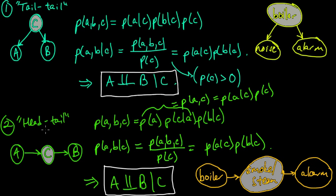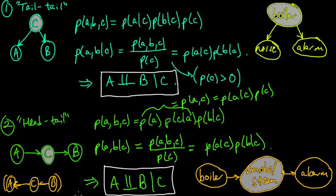So that was the head-to-tail case. If you reverse these arrows — if B was going to C and C was going to A — you would have the same result: A and B would be conditionally independent given C. So these were two nice and simple cases that ended up having the same sort of result. But then we're going to look at the third case: we've done tail-to-tail, we've done head-to-tail. Last, we need to do head-to-head, and it turns out that the head-to-head case is a lot more subtle than the others. So we're going to look at that in the next video.